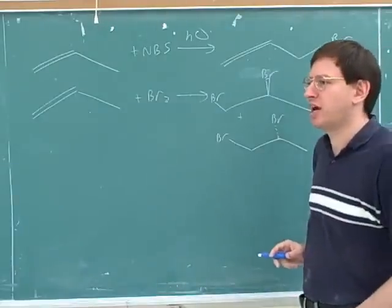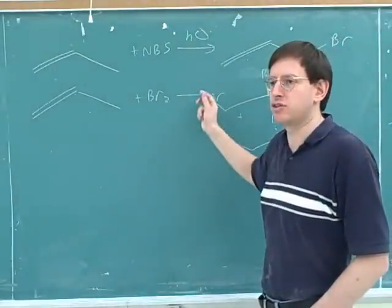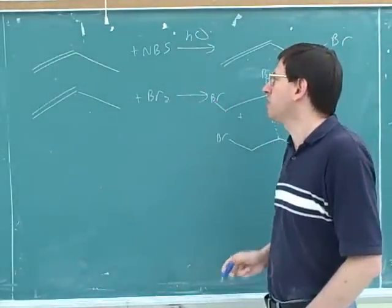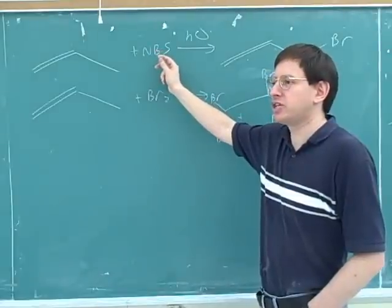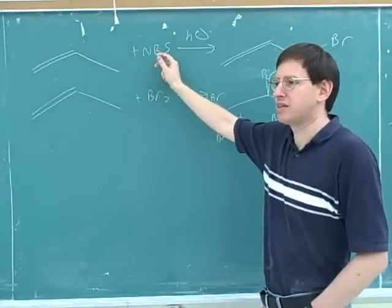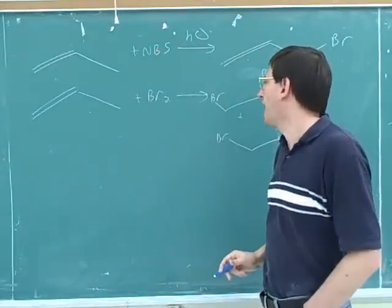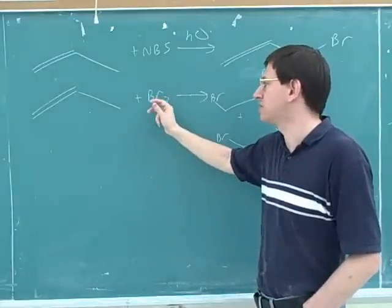All right. Well, I wanted to put these both on the board at the same time, because oftentimes students end up confusing these two reactions. If you want to do radical allylic halogenation, use NBS. If you want to do halogenation of an alkene, use Br2.